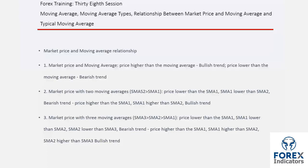Second, price with two SMAs — where SMA2 is greater than SMA1: if a price is under SMA1 and SMA2 is above SMA1, then a trader can place a sell order. If a price is over SMA1 while SMA1 is higher than SMA2, then an upward trend would be more probable.